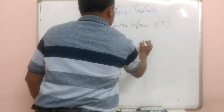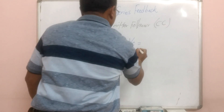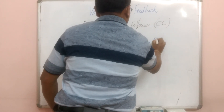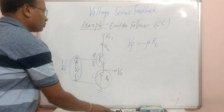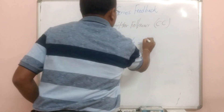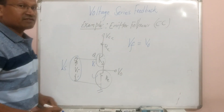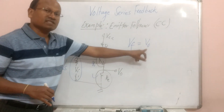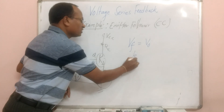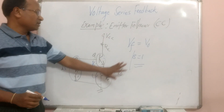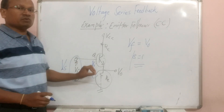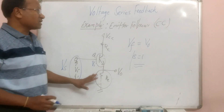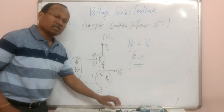When we calculate the feedback voltage, it is being developed across RE. The feedback voltage is nothing but VO here. Why? Because this is the output voltage and the feedback network is also the same resistance. Therefore in this case they are equal, so beta is equal to 1. In this particular example, beta is 1. What is more important is the topology — the example is of voltage series type, and the amplifier is a voltage series feedback amplifier.